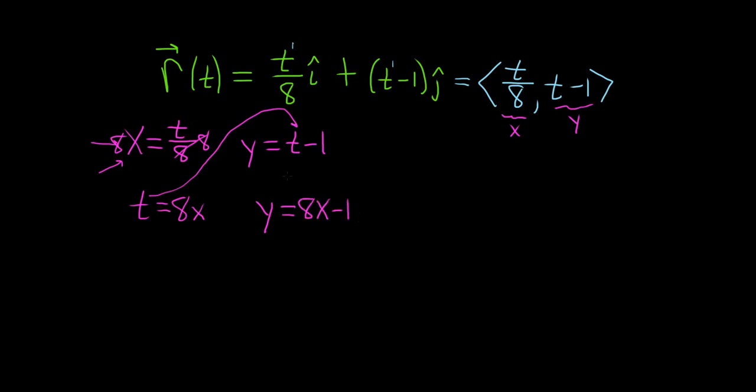So you have y equals 8x minus 1. This is always a good strategy when you have a line. You just call the first piece x, call the second piece y, solve for t, plug it in, and there's the rectangular form.